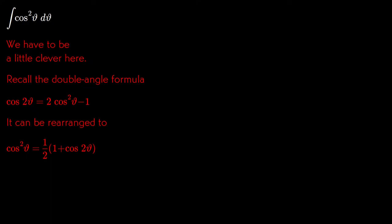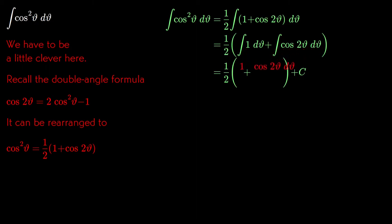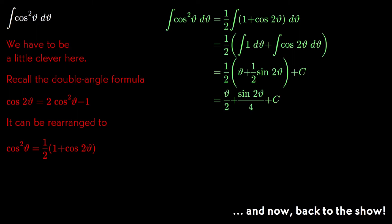We can get this one, if we're a little bit clever, by using the double angle formula. cos 2θ is 2 cos² θ minus 1. Rearrange that to put cos² θ on the left-hand side and we have a sum that we can integrate. And once we have that insight, a little bit of algebra finishes the job. Let's go back and substitute this formula in.